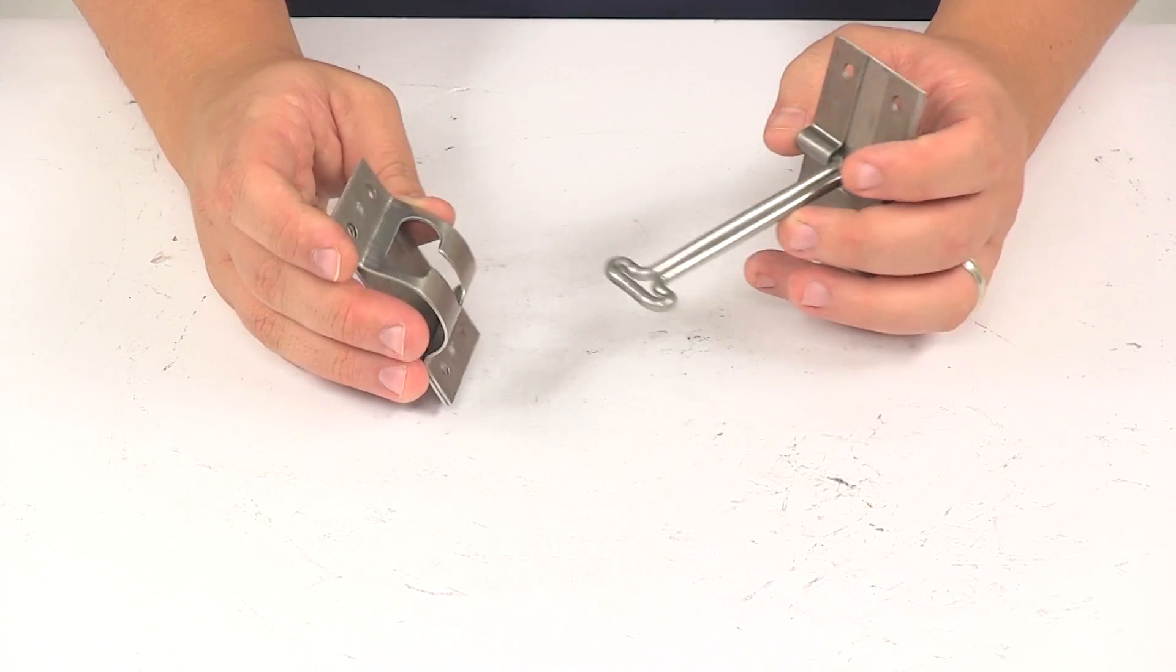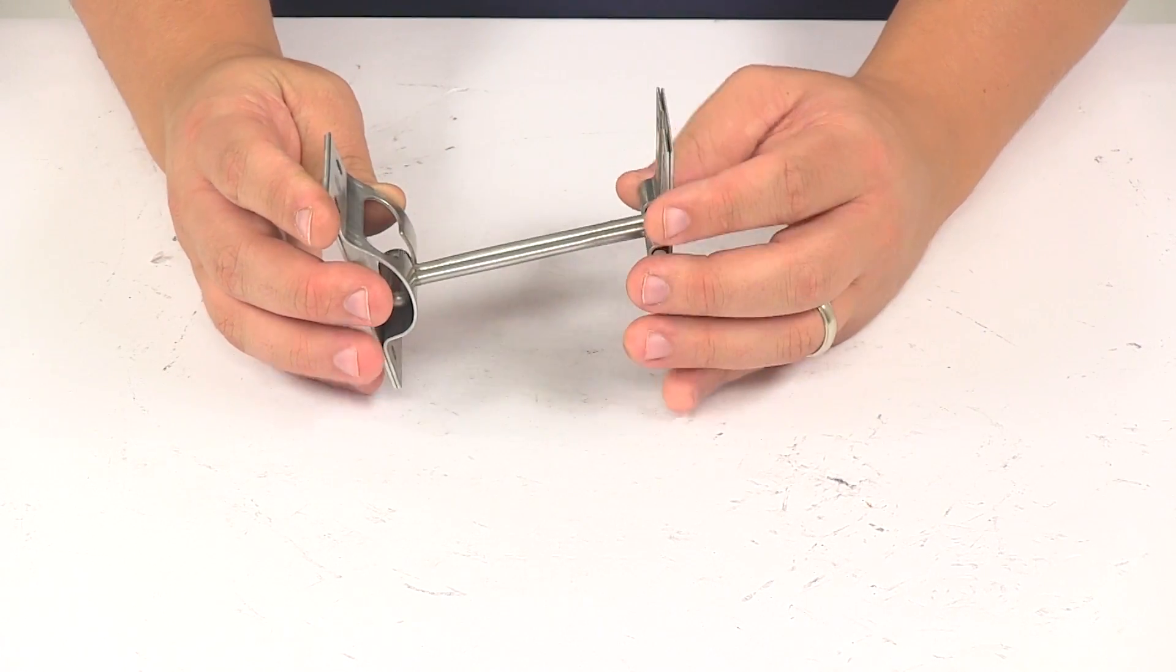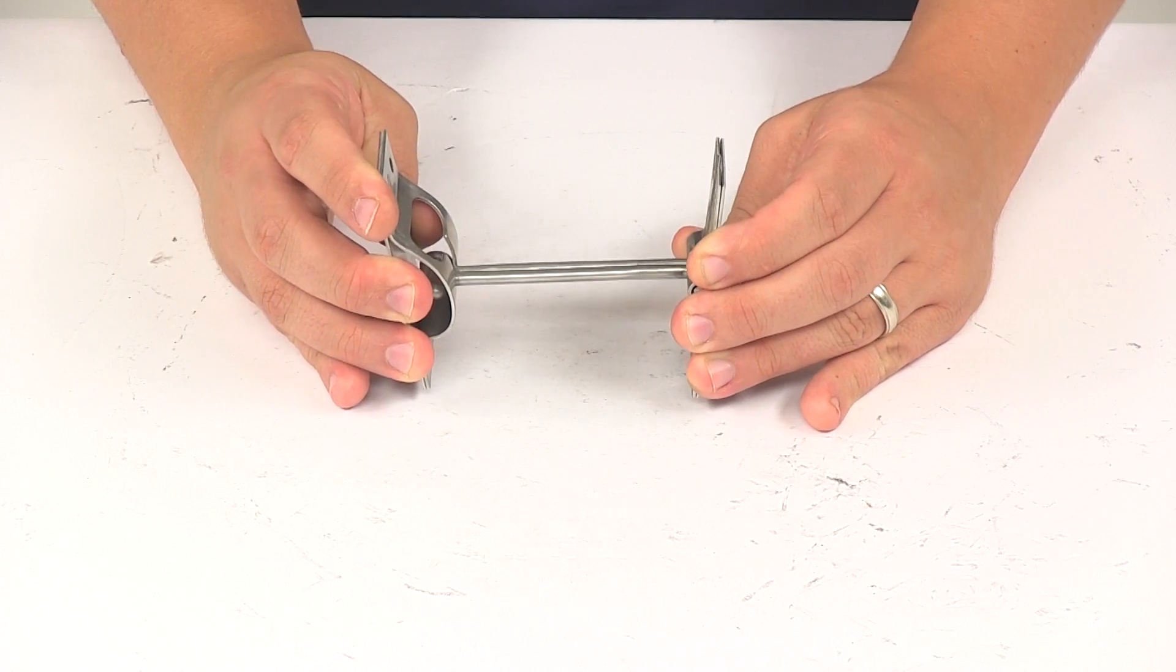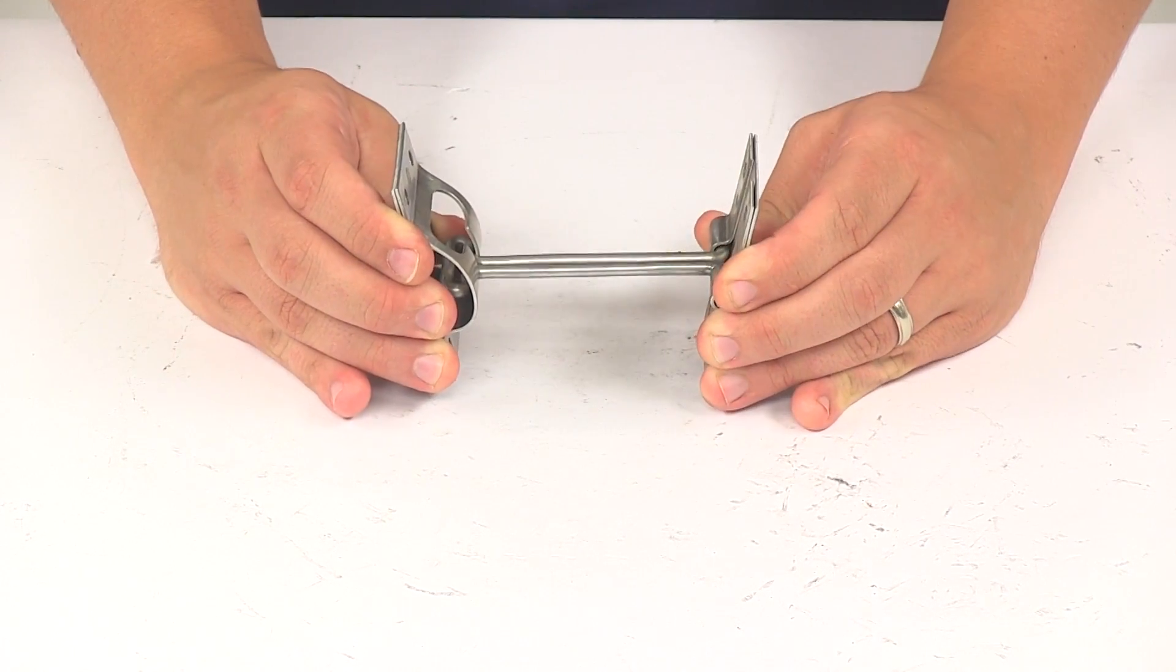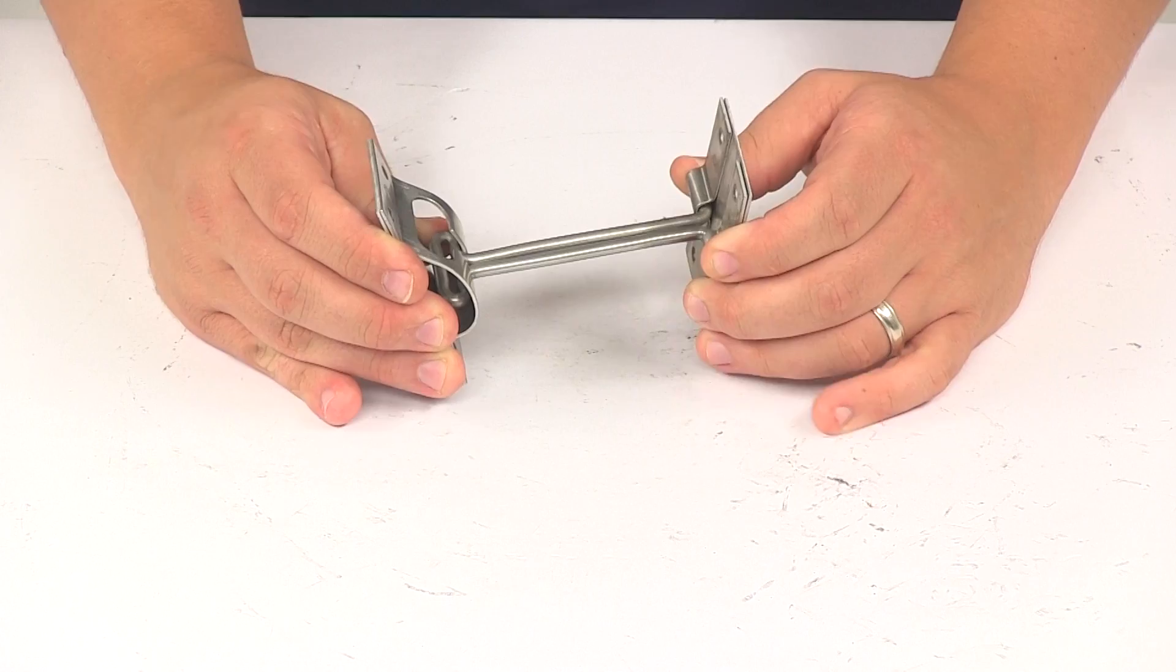So once you open your door, the hook goes into the keeper and that's going to hold the door or window on your enclosed trailer in the open position. Nice secure connection point right there.